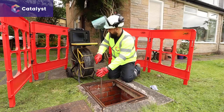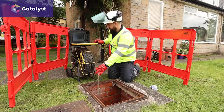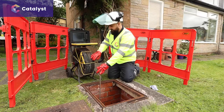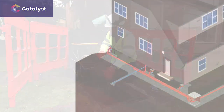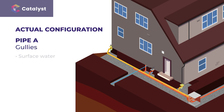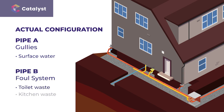Now the pipework is jetted clean, the engineer can start the camera survey. At this point, this property threw up a bit of a surprise. It was found the pipe connections were actually quite unconventional. Unusually, the two surface water gullies were connected to one service pipe, while the foul system for the toilets and kitchen waste were connected to a separate pipe, with both independently entering the same chamber. Without carrying out a drain survey, this unusual configuration would not have been easily identified.